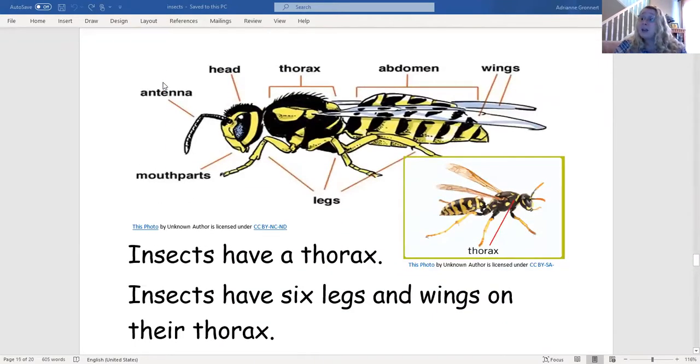Insects have a thorax. Insects have six legs and wings on their thorax. Did you find something else you could add to your text detail chart?